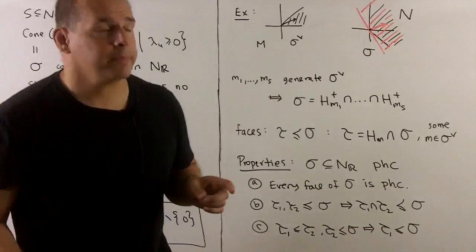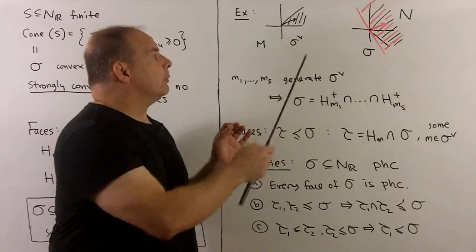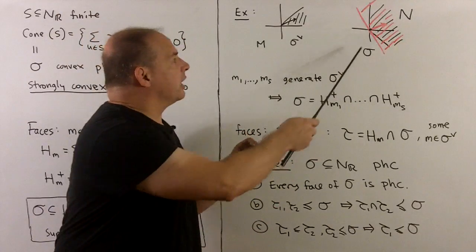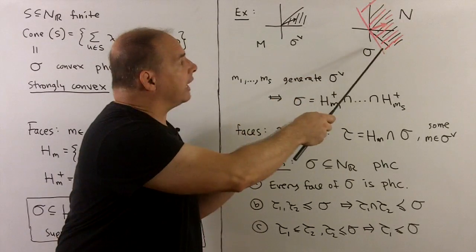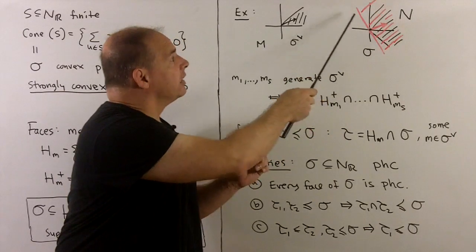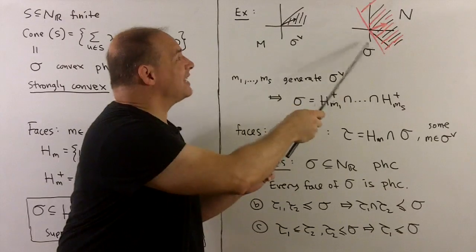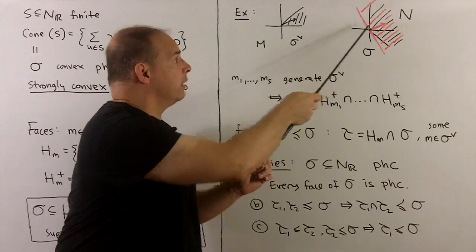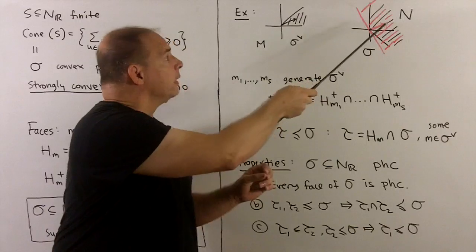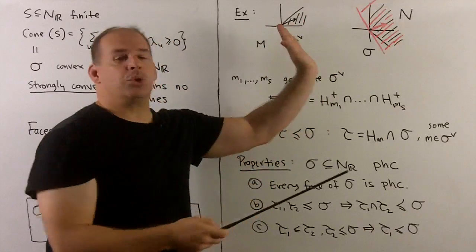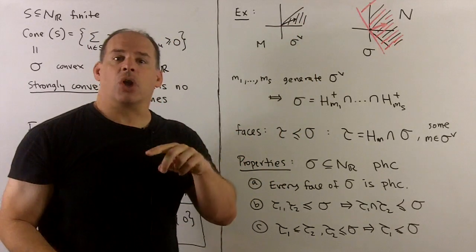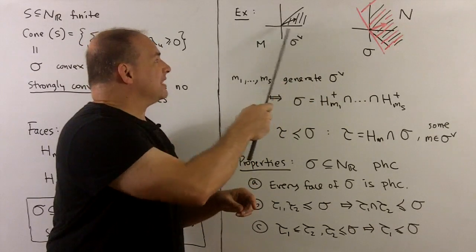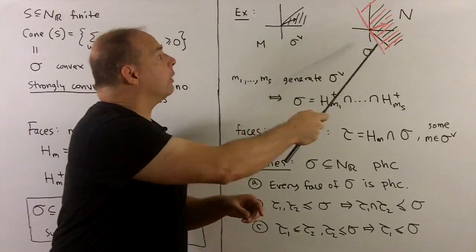For a picture: we have sigma in black on the right. If we take some halfspace containing sigma and draw in the normal, we note that no matter how we situate that halfspace, if it contains sigma, the normal m is always going to be inside of the dual, as shown.